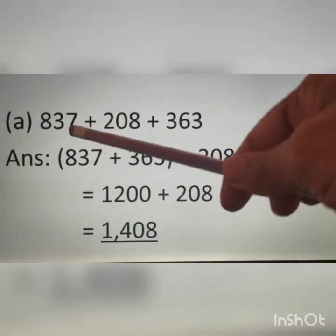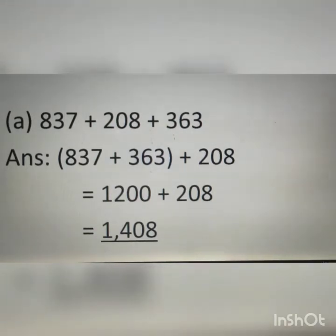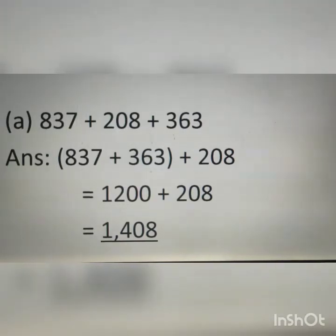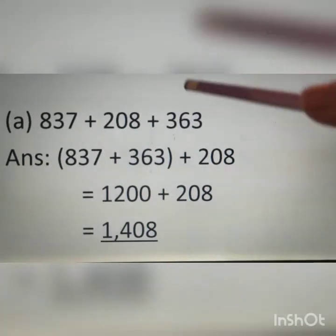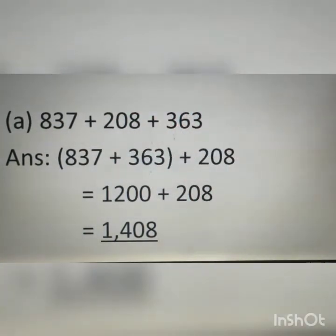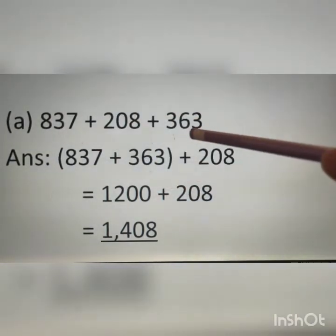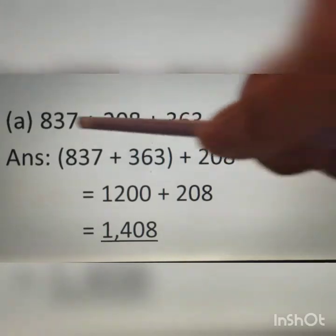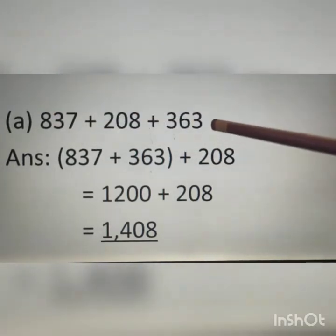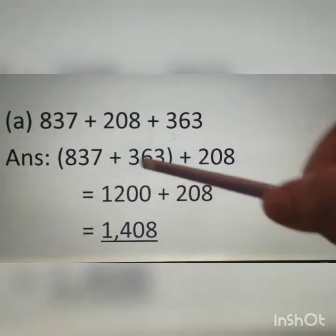Part A: 837 plus 208 plus 363. In previous classes, we learned about properties. By the commutative property, we can interchange numbers, and for addition, interchanging numbers does not change the value. Here, the unit digit of 837 is 7 and the unit digit of 363 is 3. Adding 7 plus 3 gives 10, so the calculation becomes easier by interchanging the numbers.